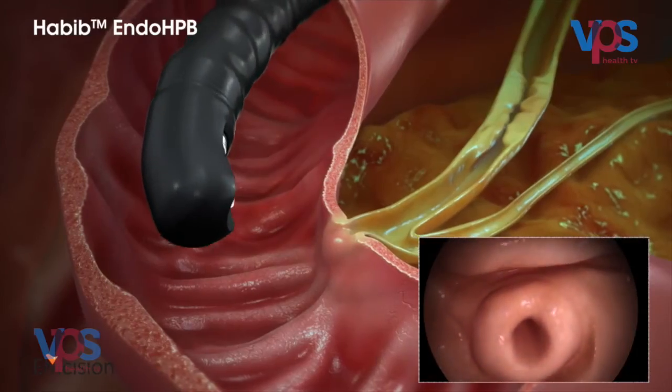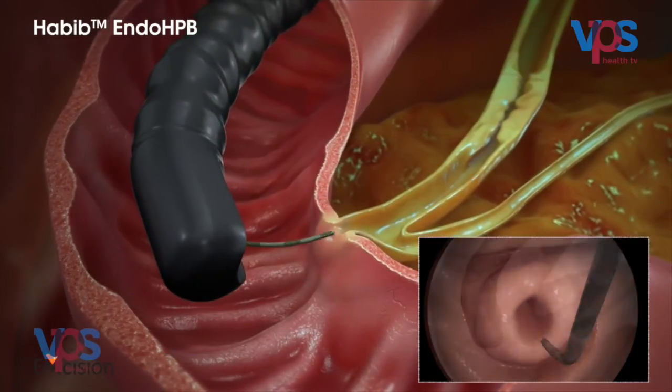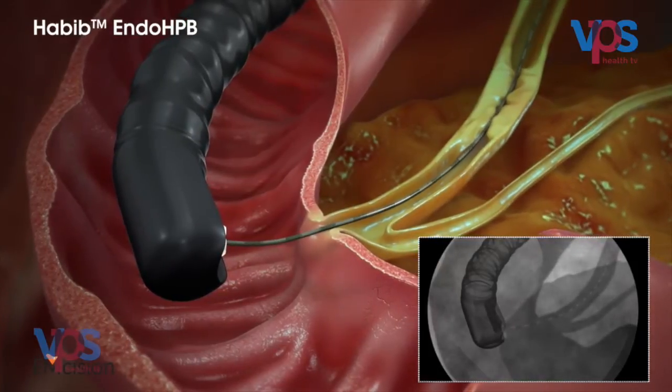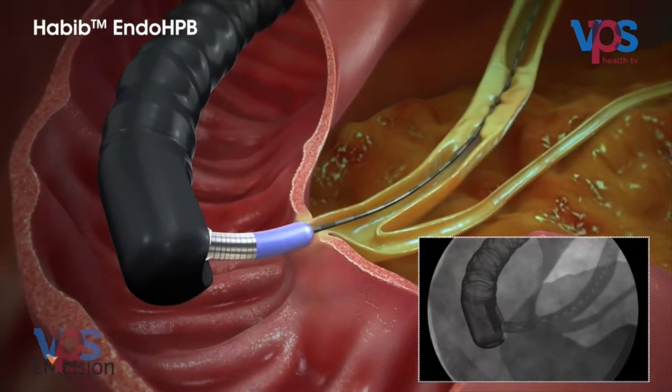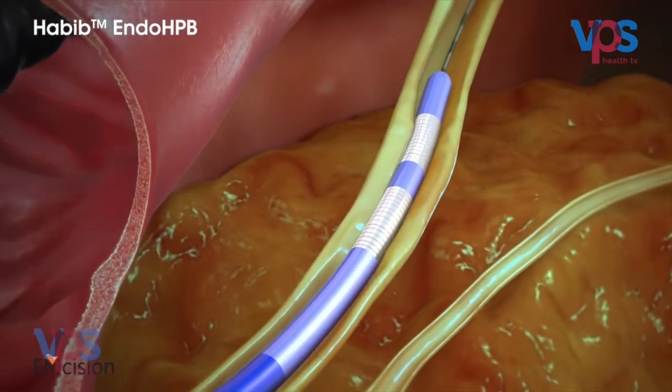Another cause of jaundice is a bile duct tumor itself. When a patient presents with jaundice in this case, we do a CT scan followed by a spyglass cholangioscopy to take a biopsy from the tumor inside the bile duct. We also have radiofrequency ablation — a small probe passed through the endoscope that burns the tumor — and we can assess how completely it has been treated.